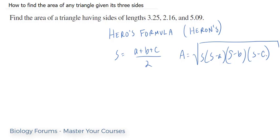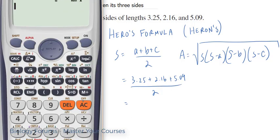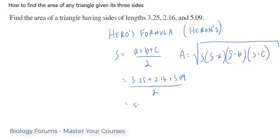So let's start off with finding S. We calculate 3.25 plus 2.16 plus 5.09, divide that all by 2. I'll use my calculator to do this. 3.25 plus 2.16 plus 5.09, and we divide that by 2, and we get 5.25. Let's write that down: 5.25.